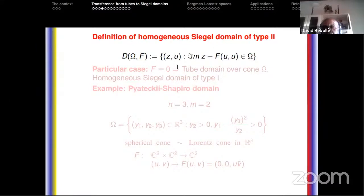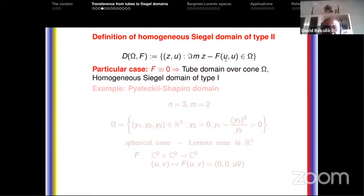Having defined the Ω-Hermitian form, we can define a homogeneous Siegel domain of type 2. A point (Z, U) with Z in ℂⁿ and U in ℂᴹ belongs to D(Ω, F) if the imaginary part of Z minus F(U, U) belongs to Ω. This definition was also given by Alex Nagel yesterday. When F is identically zero, the homogeneous Siegel domain of type 2 is a tube over the cone Ω, called of type 1.